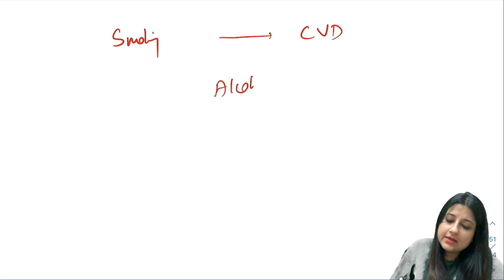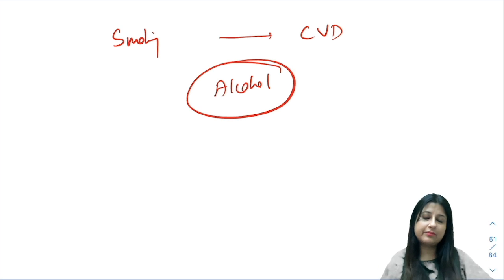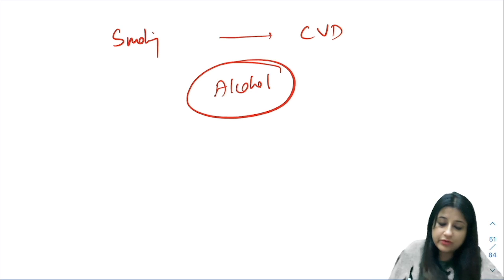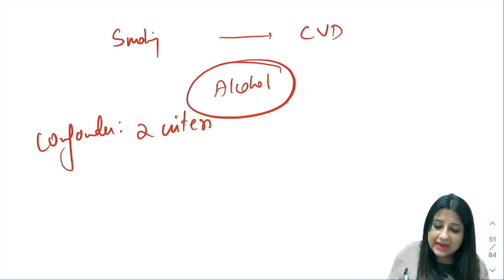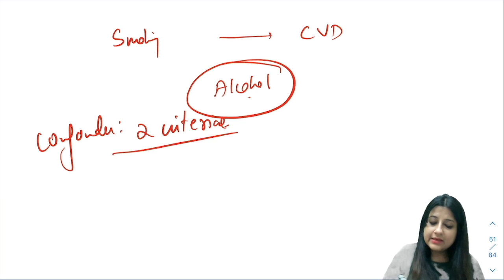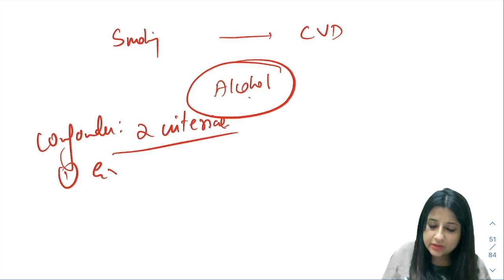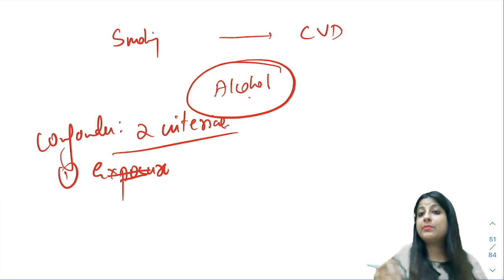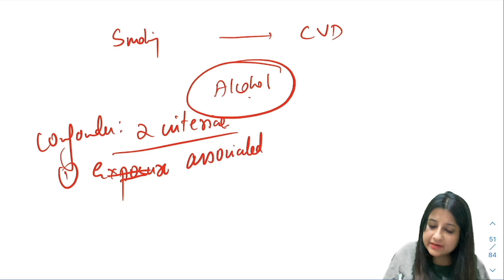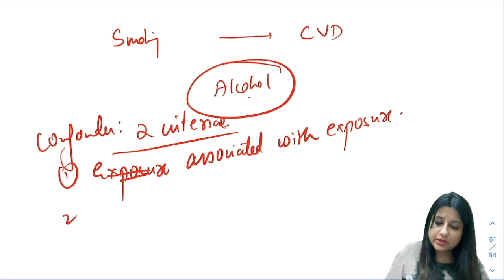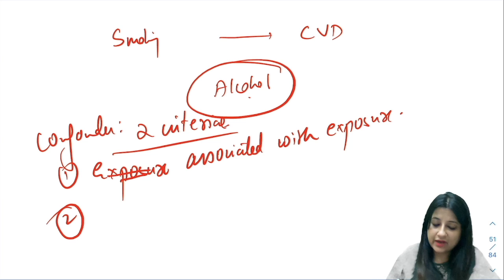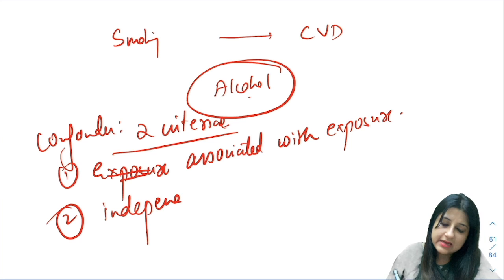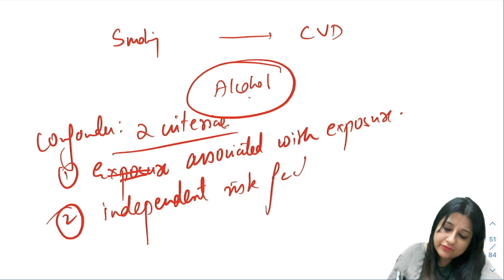Suppose we were studying smoking and CVD and the third factor was alcohol. Is it a confounder or an effect modifier? For any variable to be a confounder, it has to fulfill two criteria. Number one: it has to be associated with the exposure. Number two: that third variable should be an independent risk factor for the outcome.